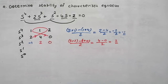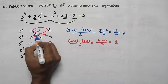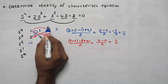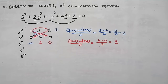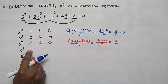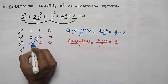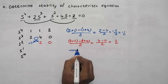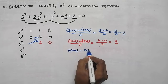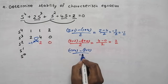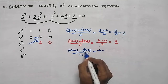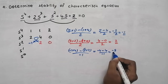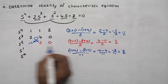Now to get the first element of the next row, we multiply starting from minus 1: minus 1 into 4 minus 2 into 2, divided by the starting element minus 1. That gives minus 4 minus 4 equals minus 8, divided by minus 1, so the answer is 8.